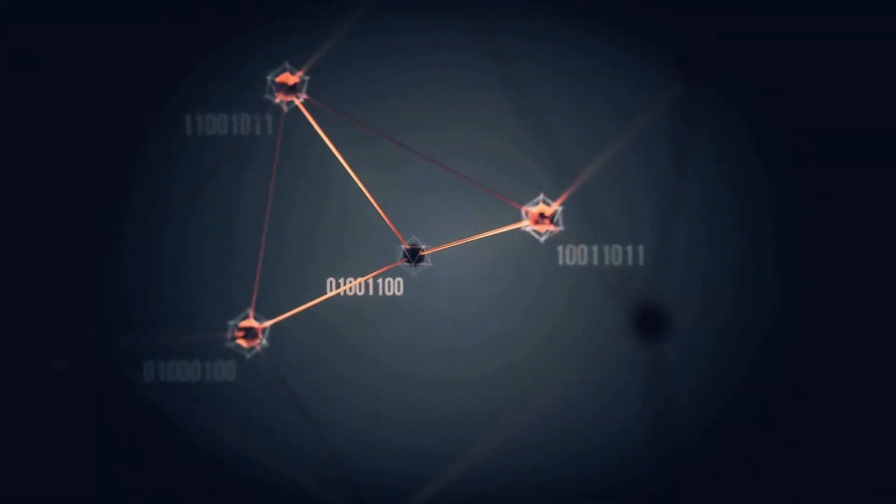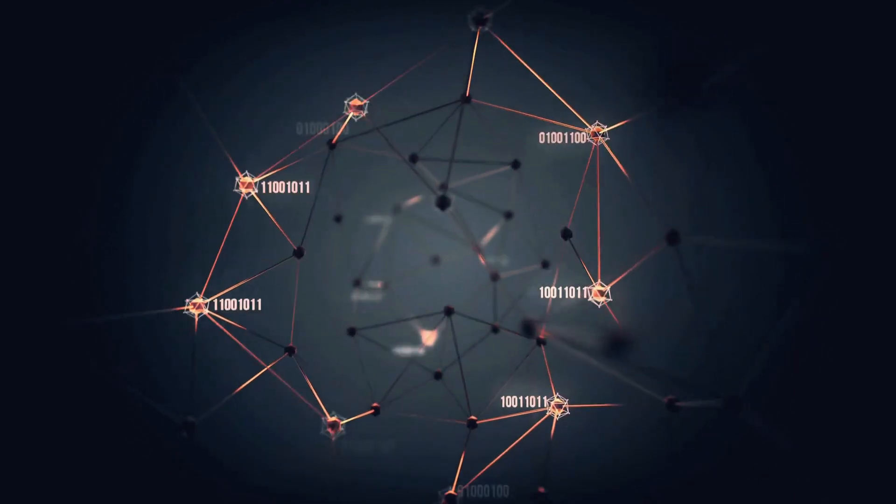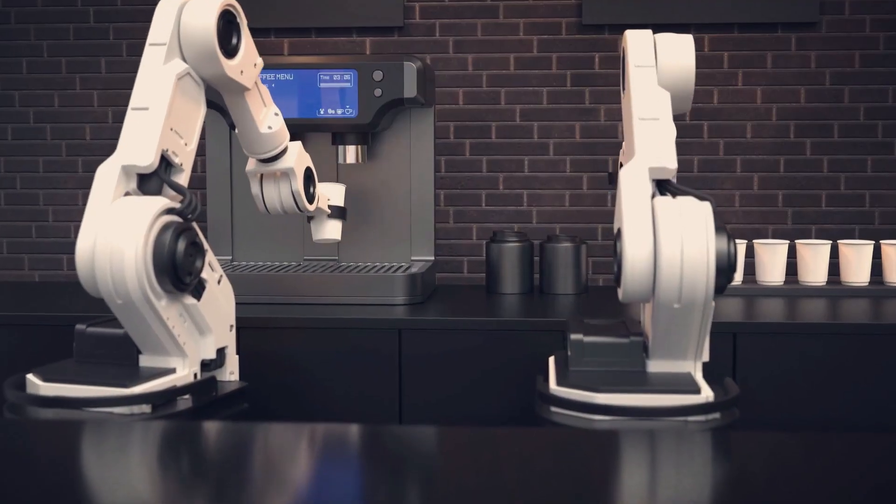Layers of artificial neurons work together, processing data in a way that allows the network to learn complex patterns and solve intricate problems.